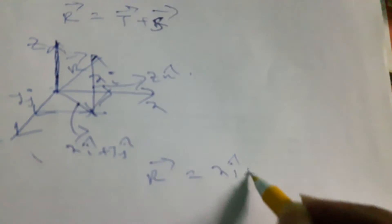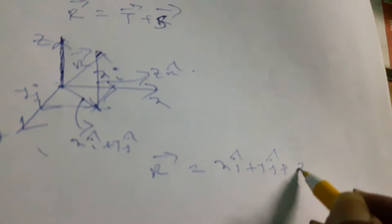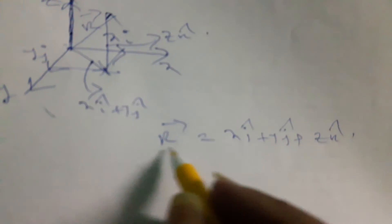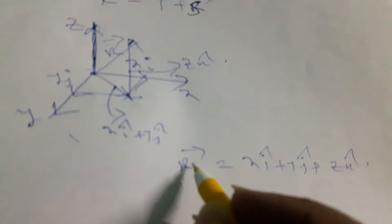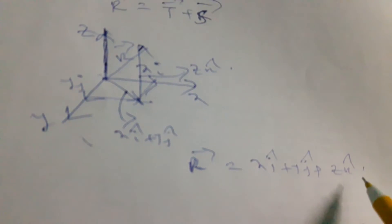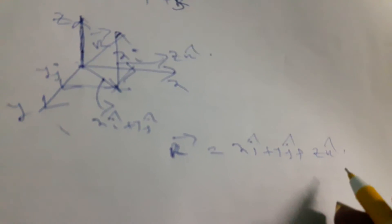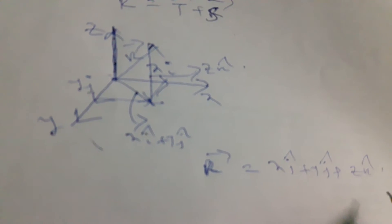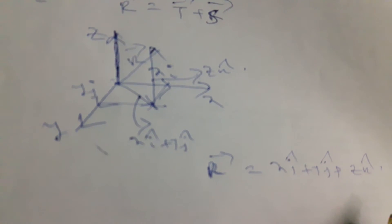And if we take another vector like that point, then that vector is Z k. Then R vector will be represented as this plus this. So it will be X i plus Y j plus Z k. So in this way, we can represent any vector as X i plus Y j plus Z k. These are general representations of vectors with this type of system.